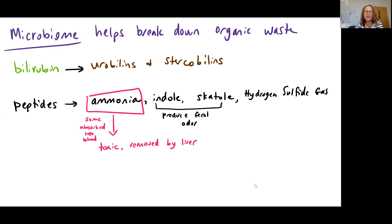Hydrogen sulfide gas is produced as a result of breaking down proteins. That's that rotten egg smell. And then ammonia, as mentioned, is toxic to the body. A lot of this is just going to be removed in the large intestine, but some can get reabsorbed back into the bloodstream where it's then removed by the liver.